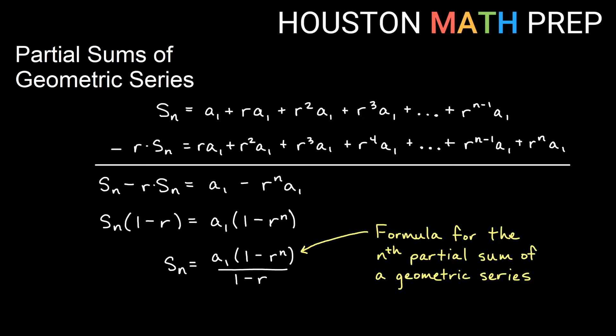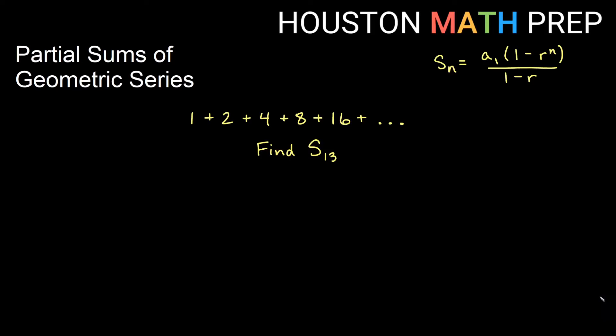That's our formula for the nth partial sum of a geometric series. Let's go ahead and look at finding the sum of the first 13 terms now using my formula.